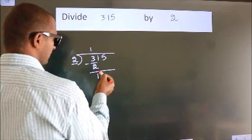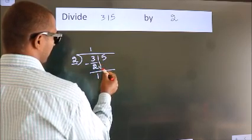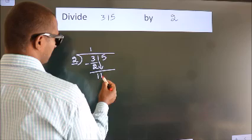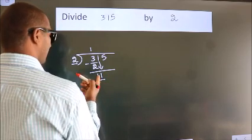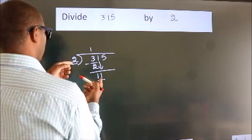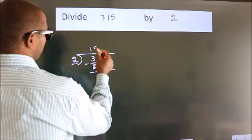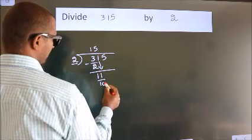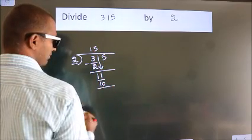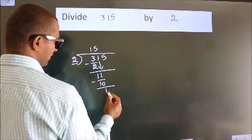After this, bring down the next number. So 1 down. So 11. A number close to 11 in the 2 table is 2 times 5, which is 10. Now we subtract. We get 1.